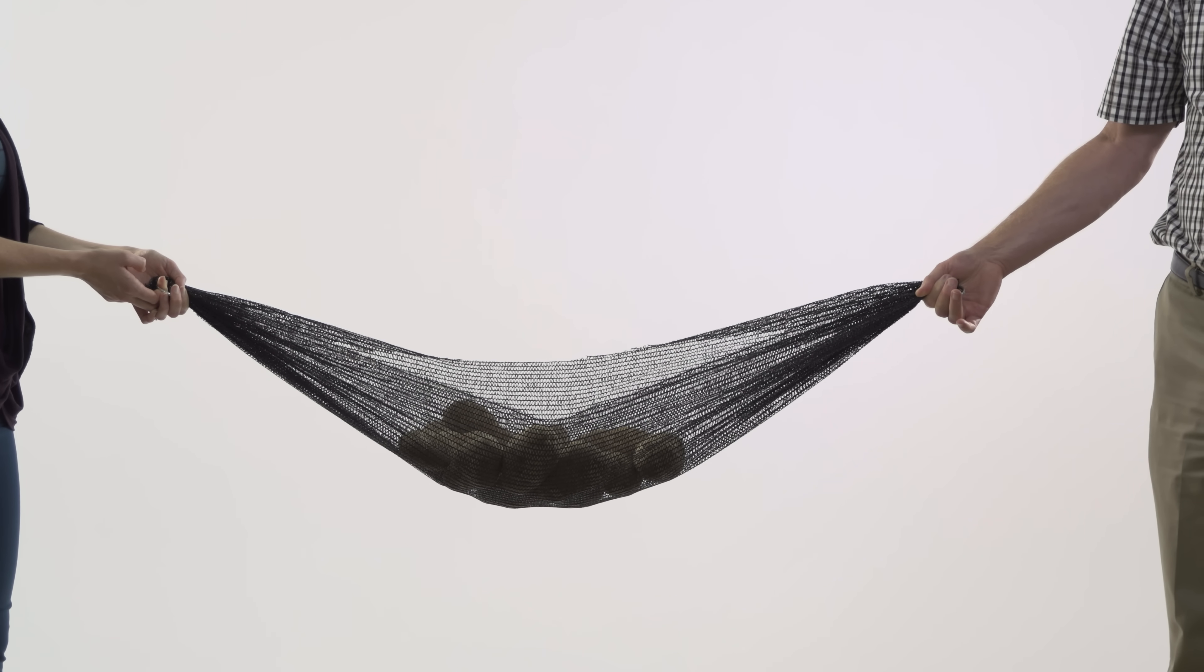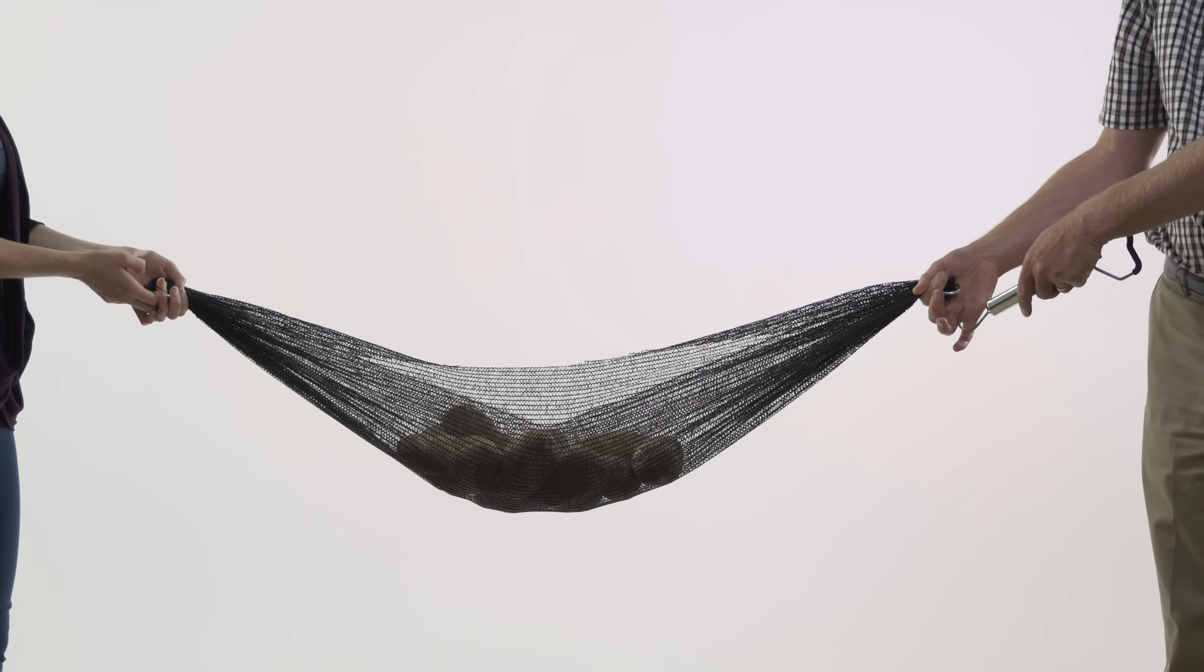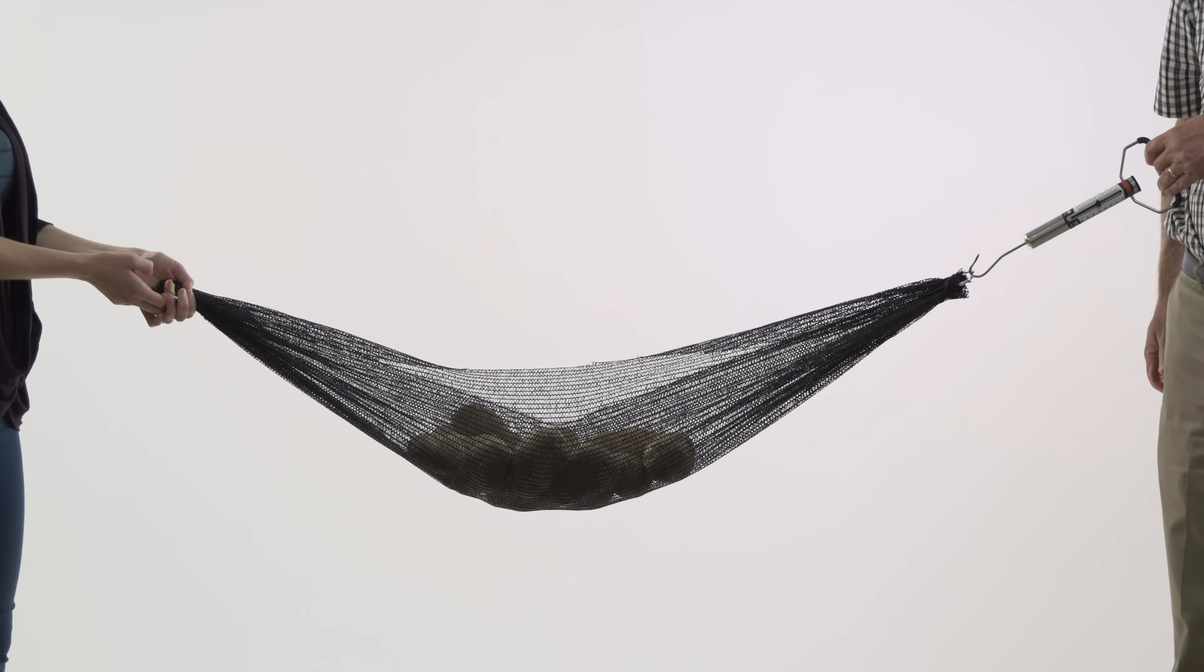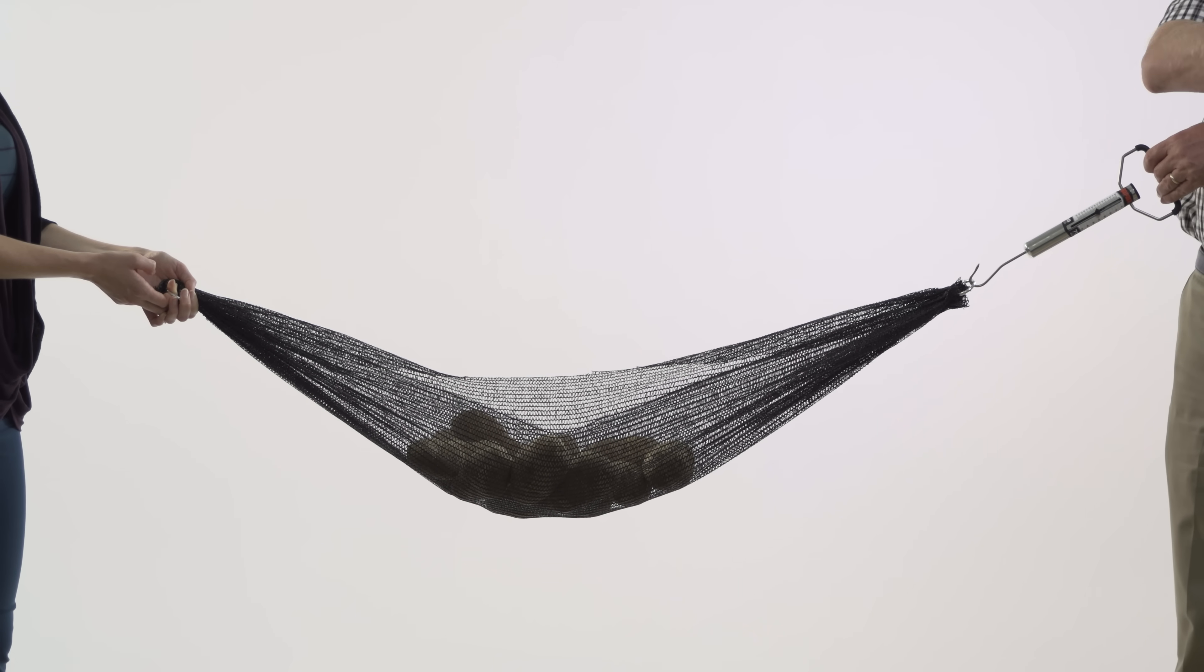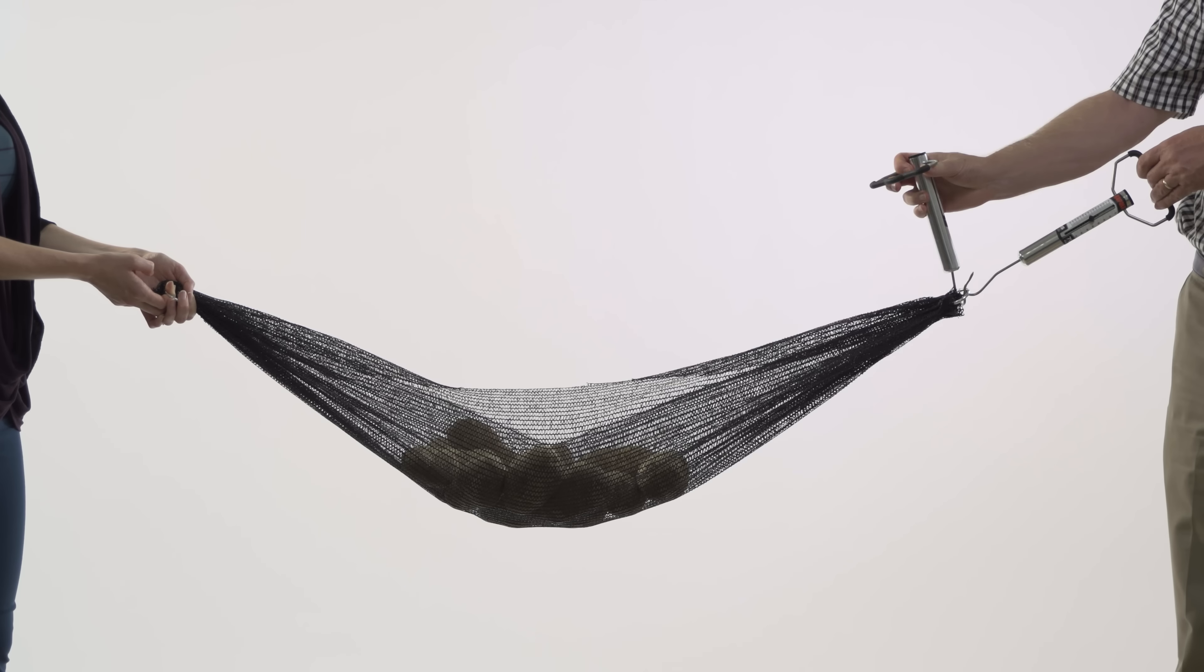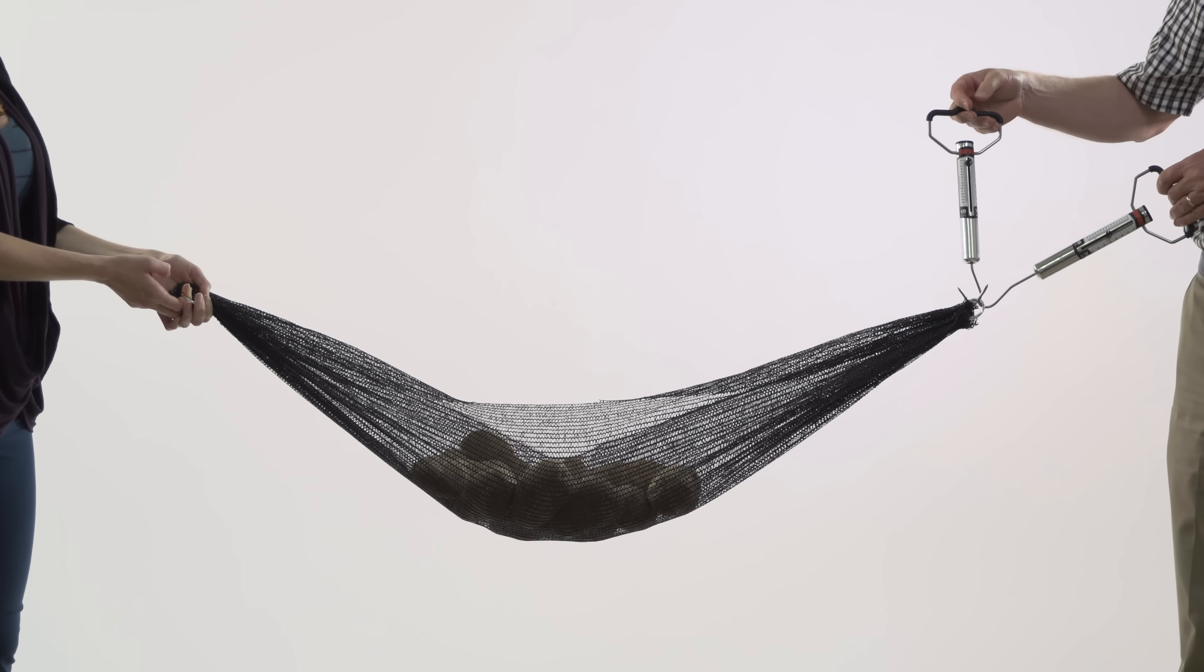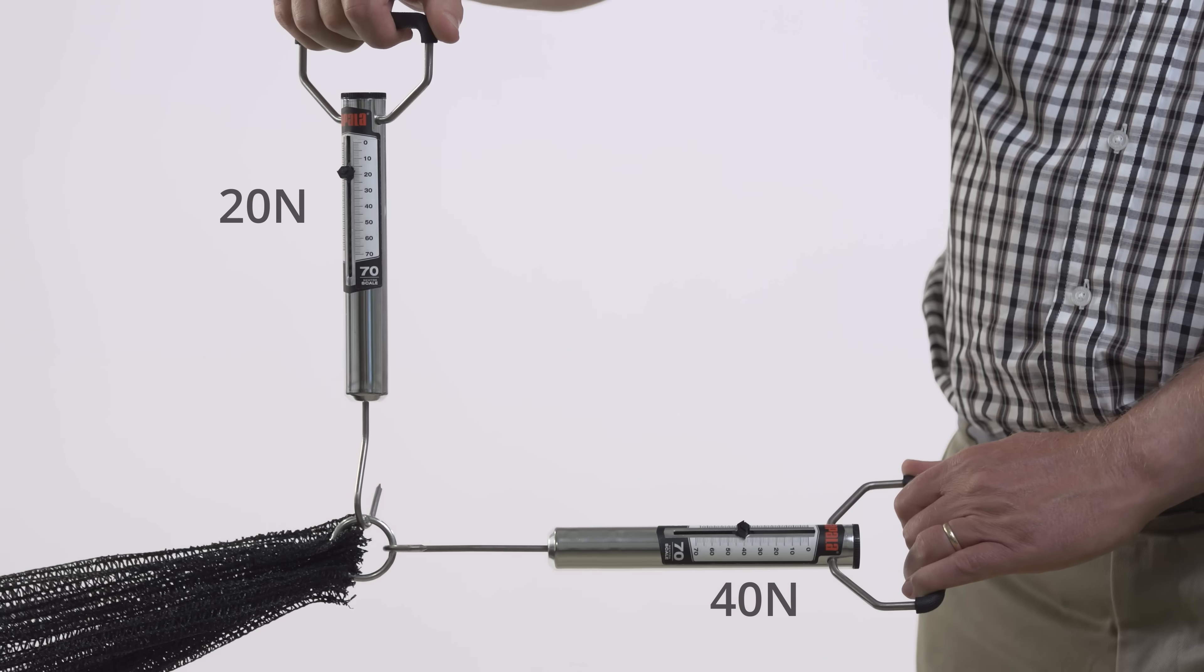We can verify our graphical findings by building a model hammock. We can support the right end of the hammock using a single angled spring scale and directly measure the force F2. Alternatively, we can use vertical and horizontal scales in combination so as to mechanically resolve the force F2 into its horizontal and vertical components. It is then easy to see that the horizontal force is much larger than the vertical one, just as our graphical analysis predicted.